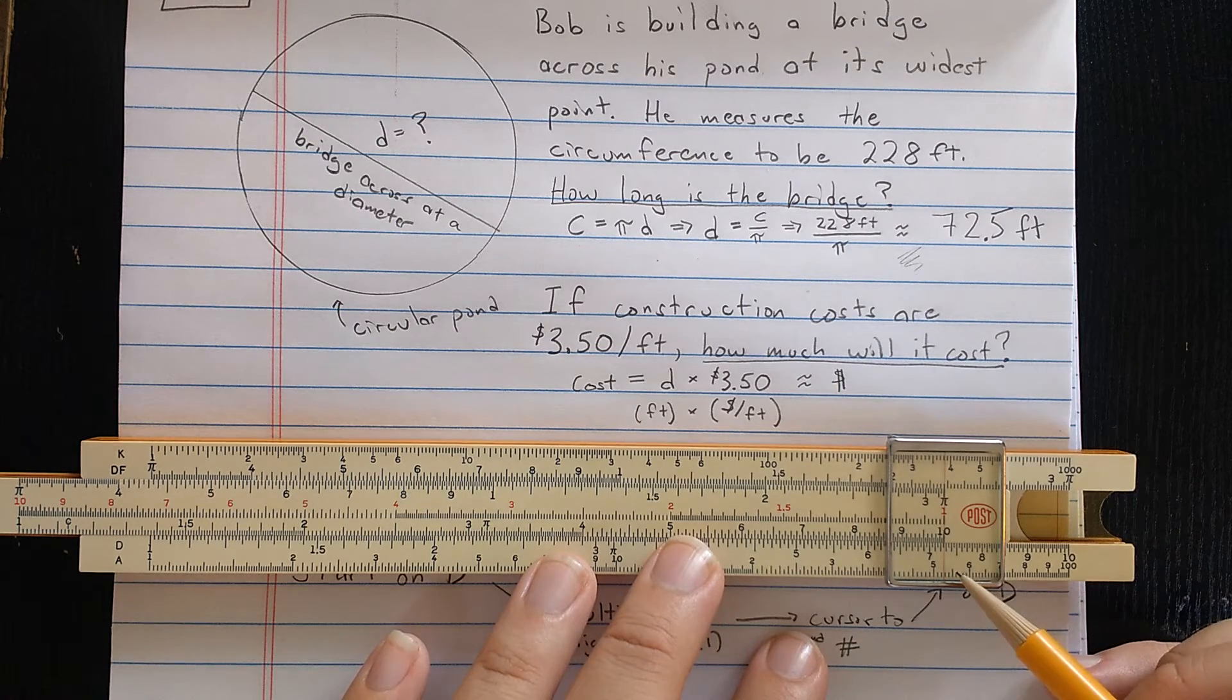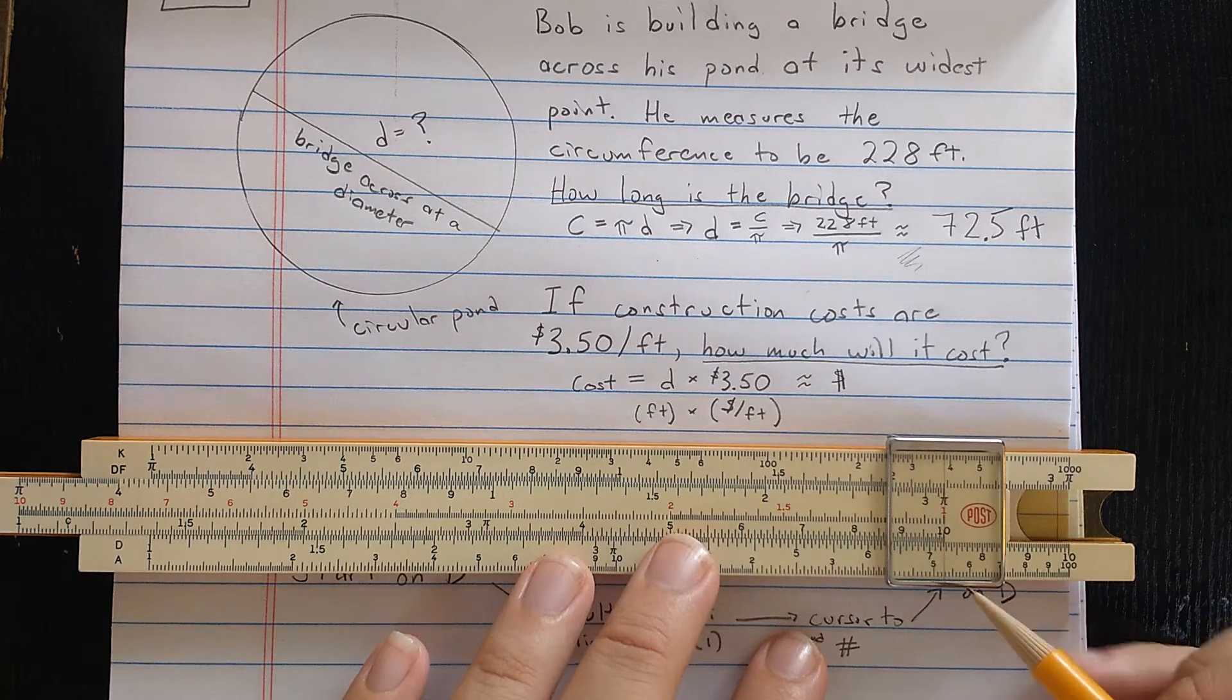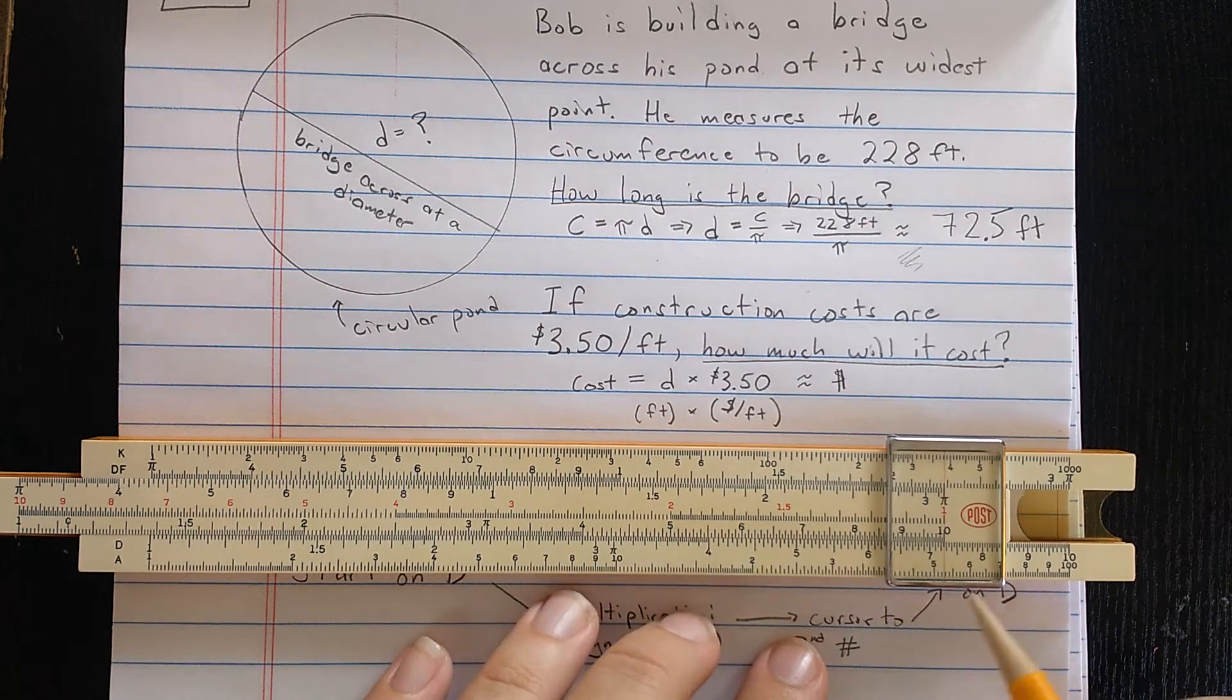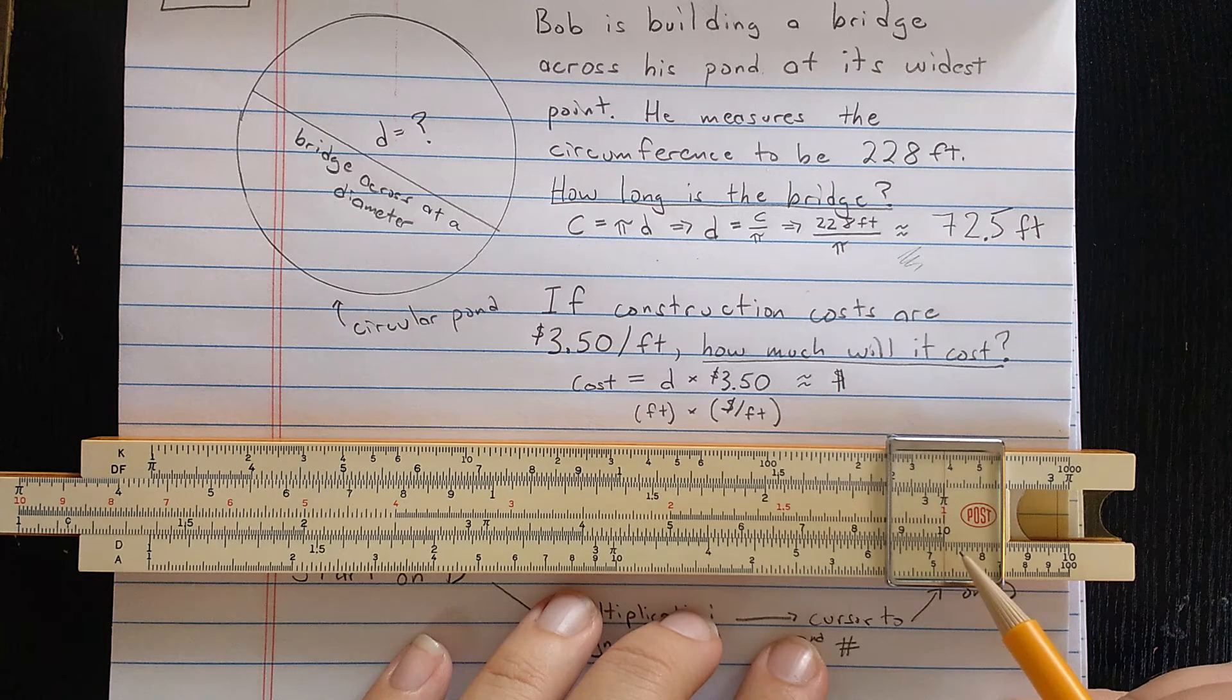And then you align the index of the C scale with that number. So this is already set up for the second multiplication. But again, what I would do is find the number on the D scale, and then align that with the index on the C scale.